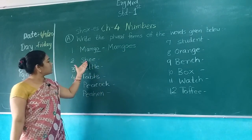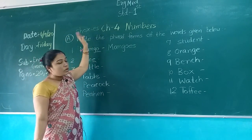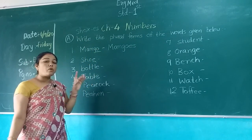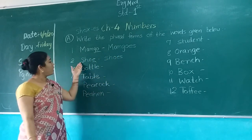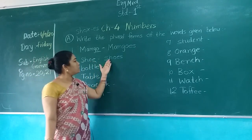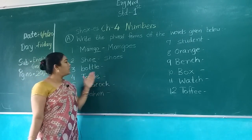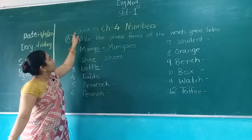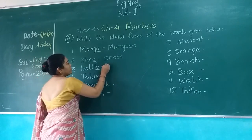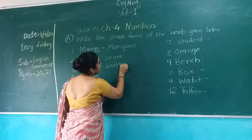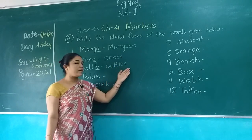Second: S-H-O-E, Shoe. Last letter is E — not in S-H-O-X. So we add only S: S-H-O-E-S, Shoes. Third: B-O-T-T-L-E, Bottle. Last letter is E. So we add only S: B-O-T-T-L-E-S, Bottles.